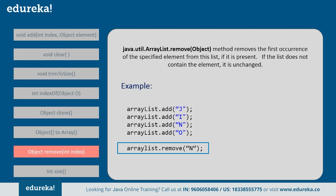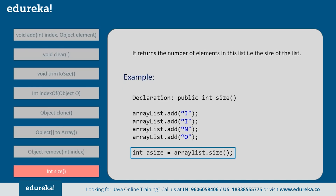Next is the size() method. This returns the number of elements in the list — that is, the size of the list. Suppose we have added four elements; then it returns the size of the ArrayList as 4. Now let's demonstrate all the methods and see how they work.